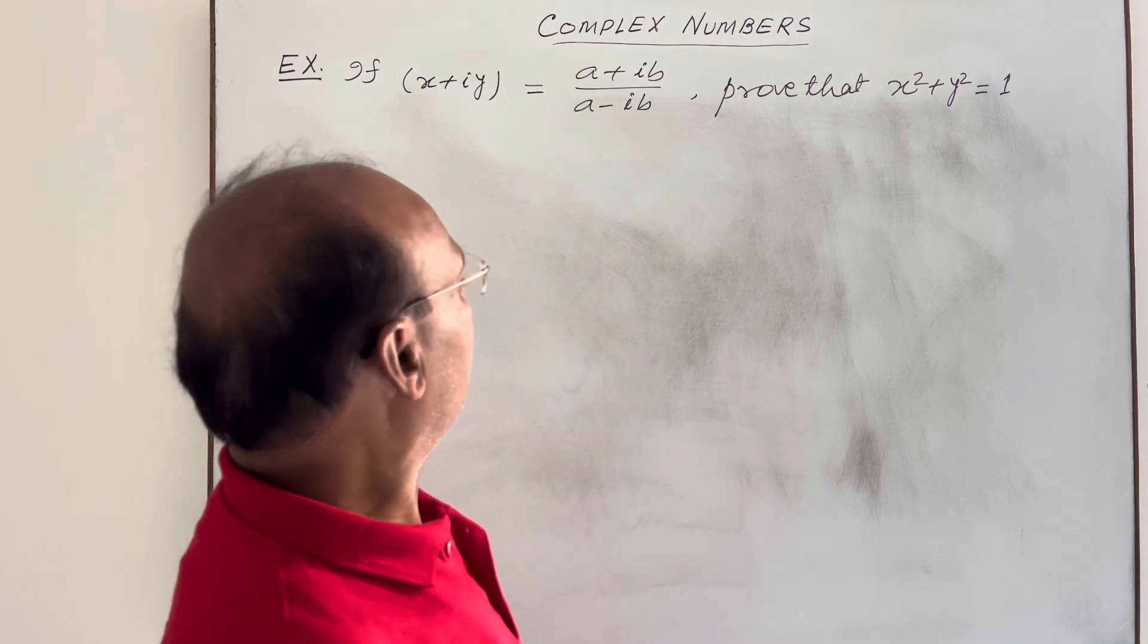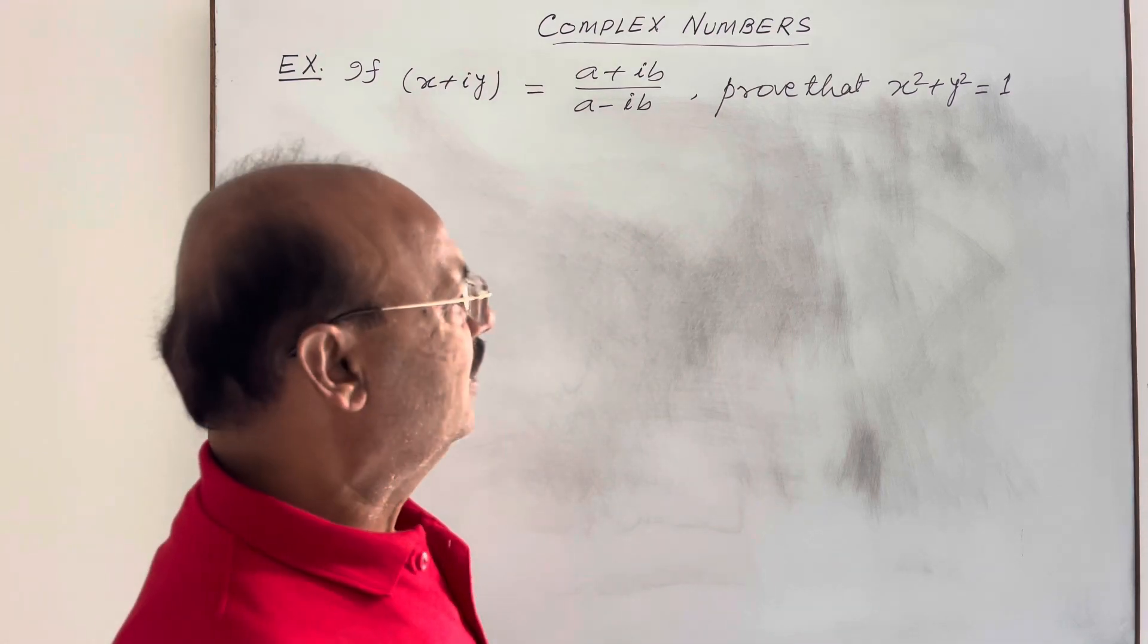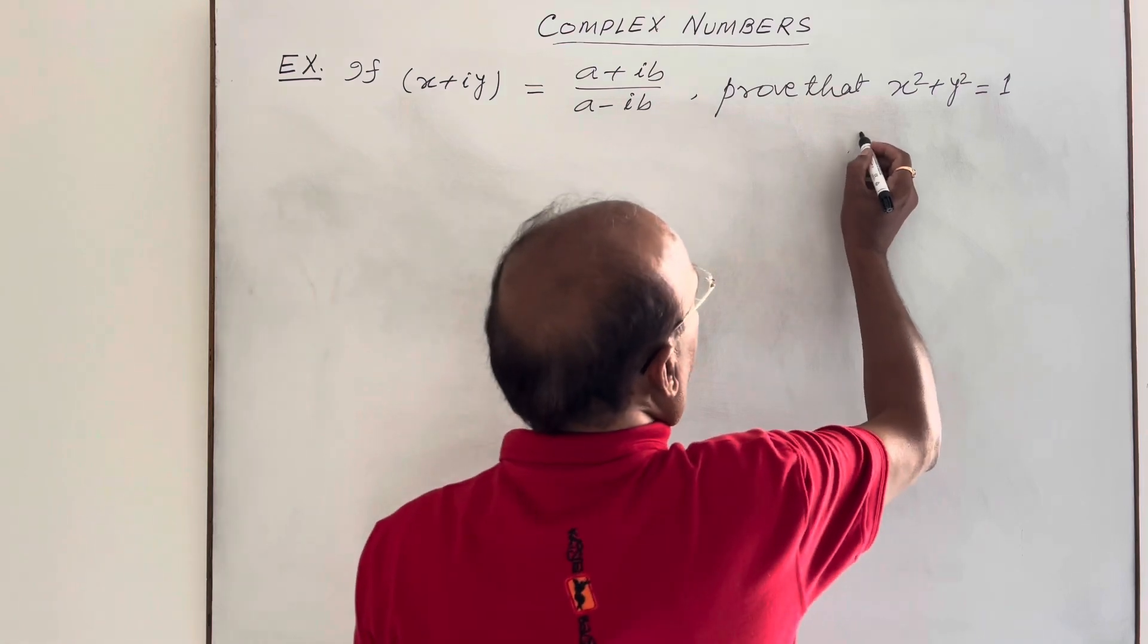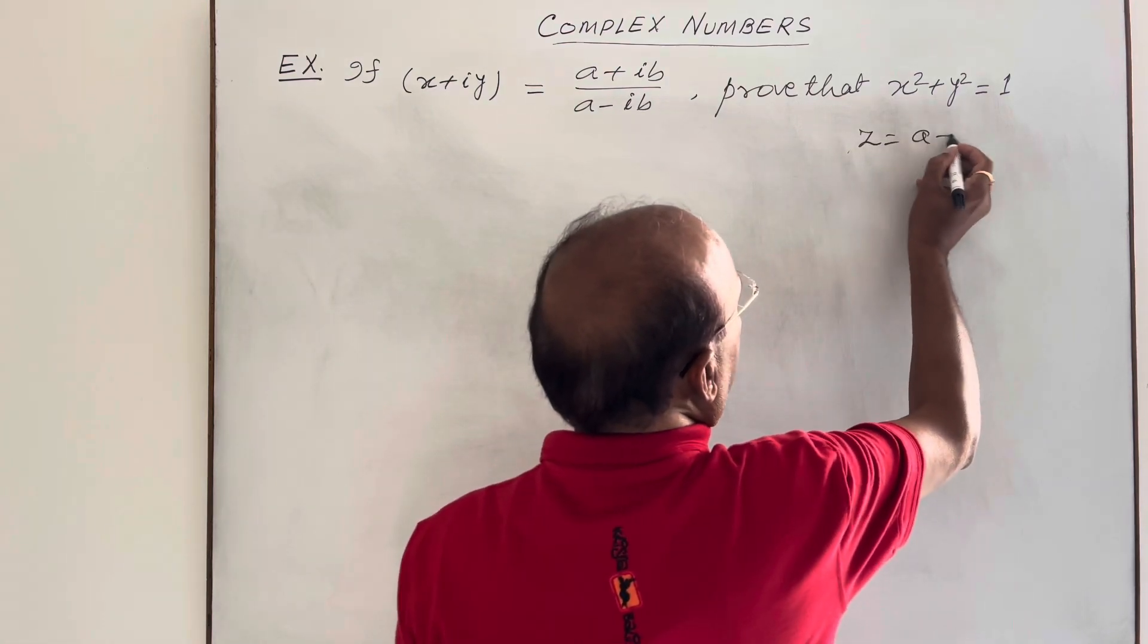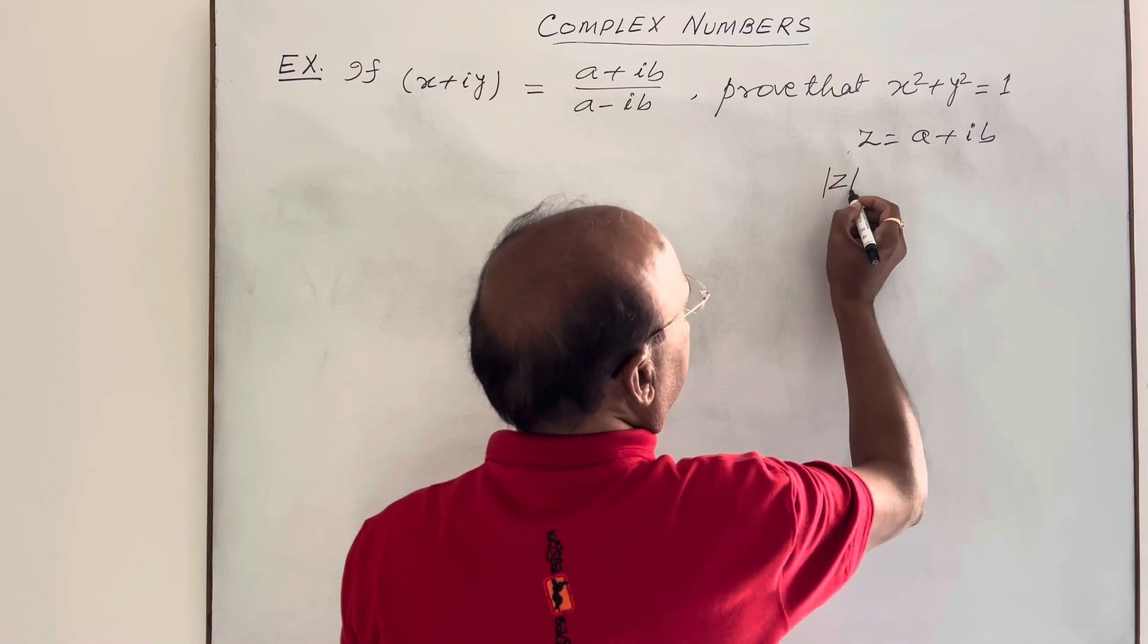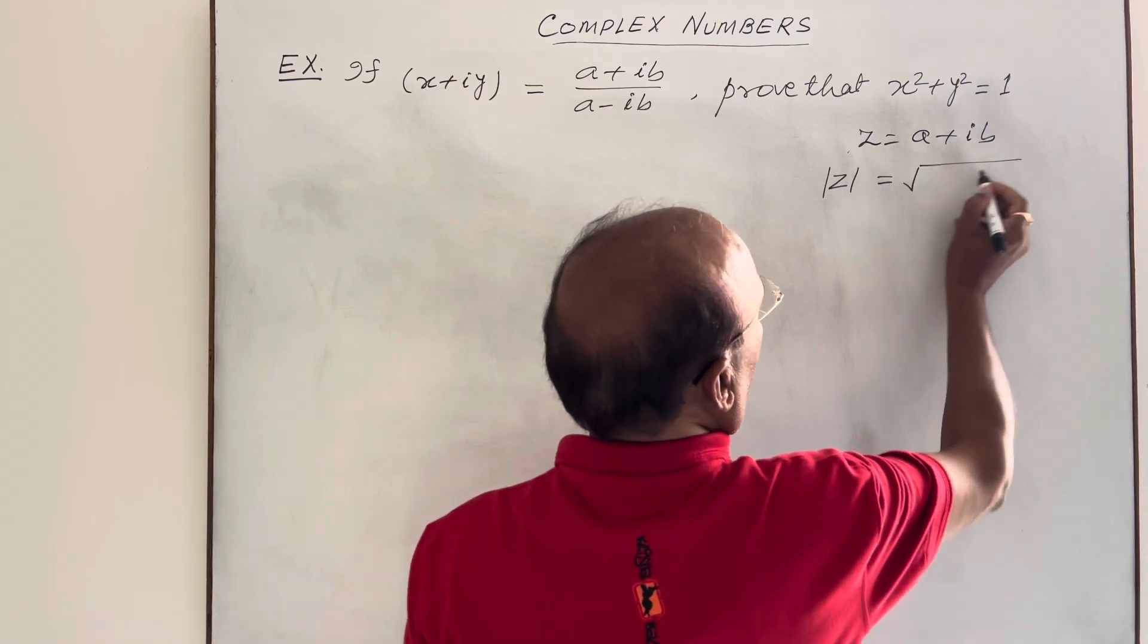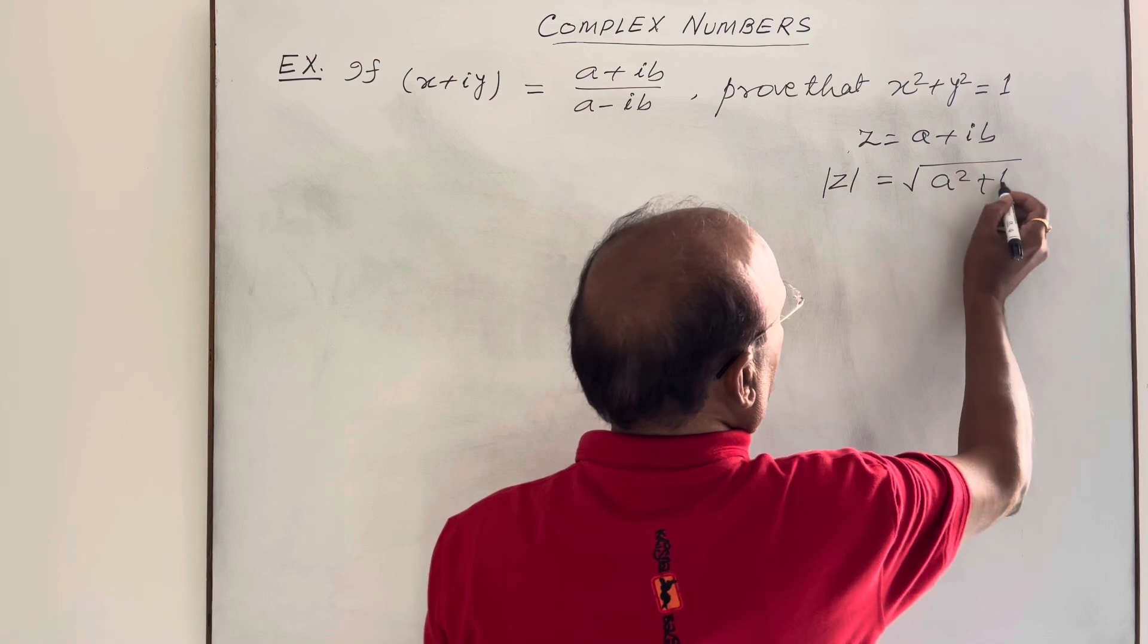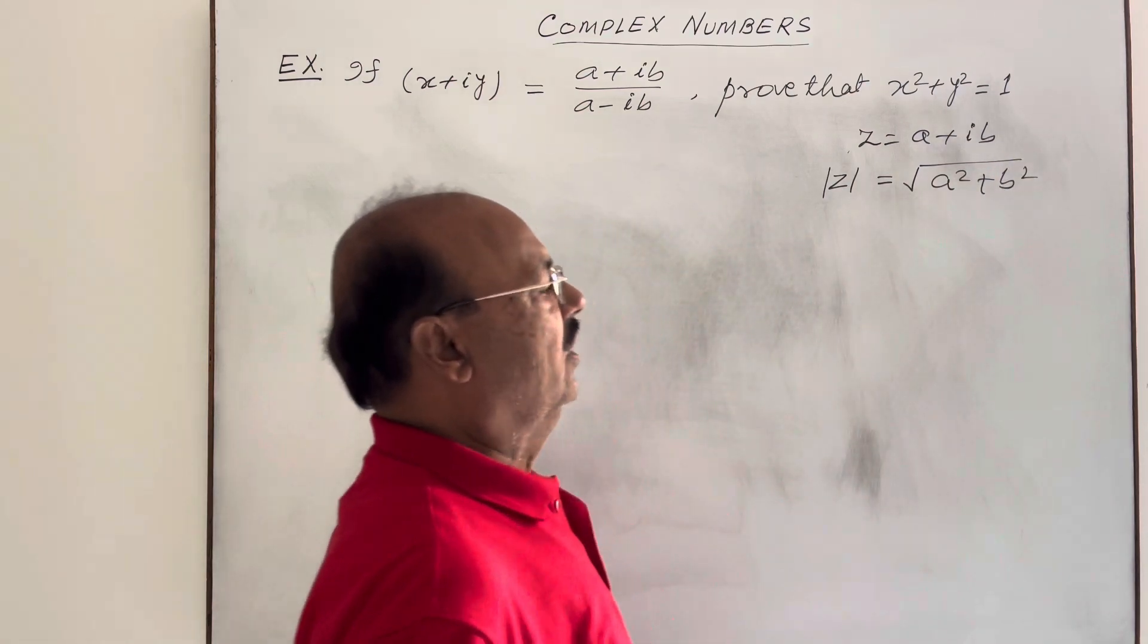So we know the property of modulus of a complex number that if z is any complex number a plus ib, then its modulus, mod of z, is equal to root over a square plus b square.